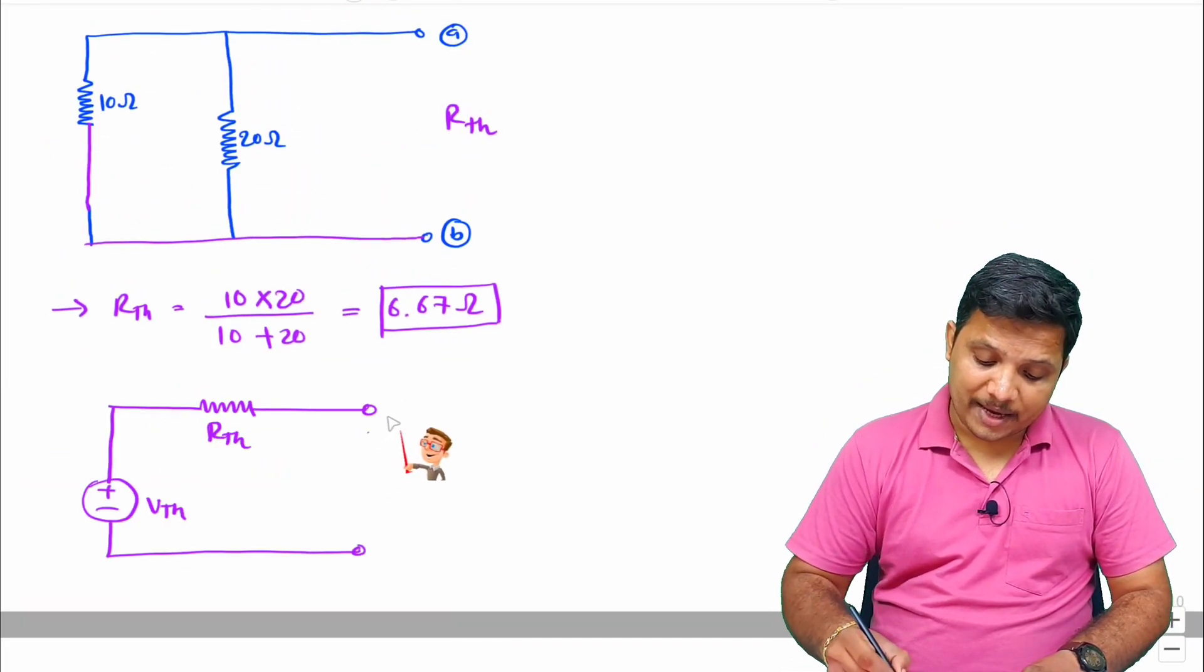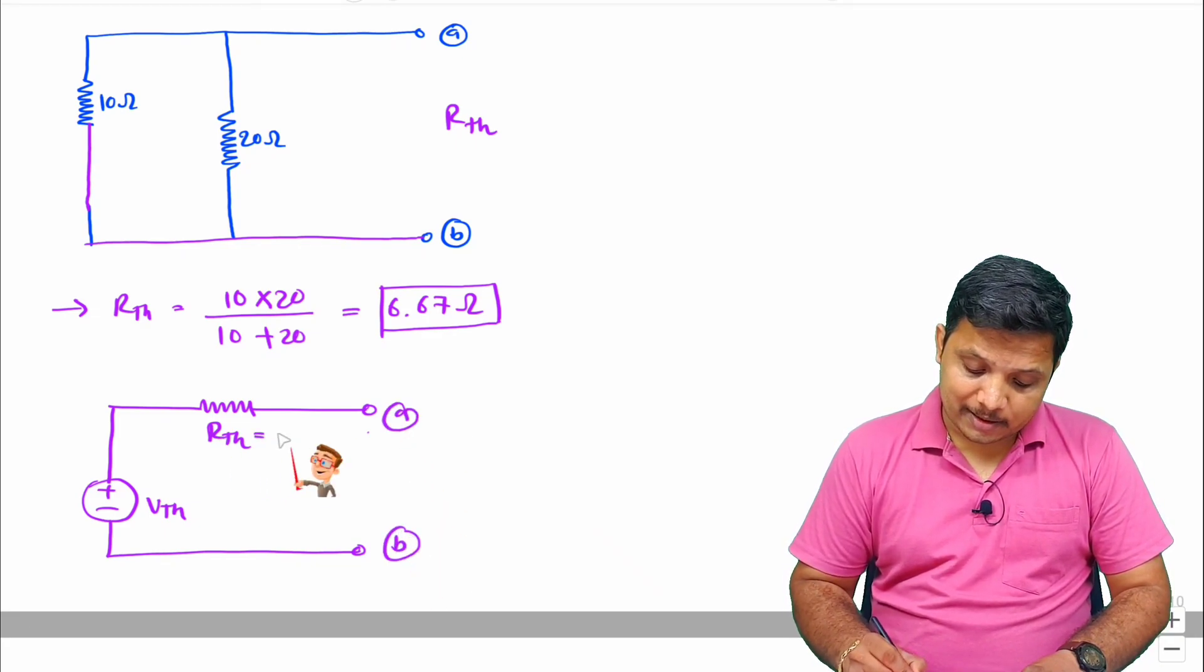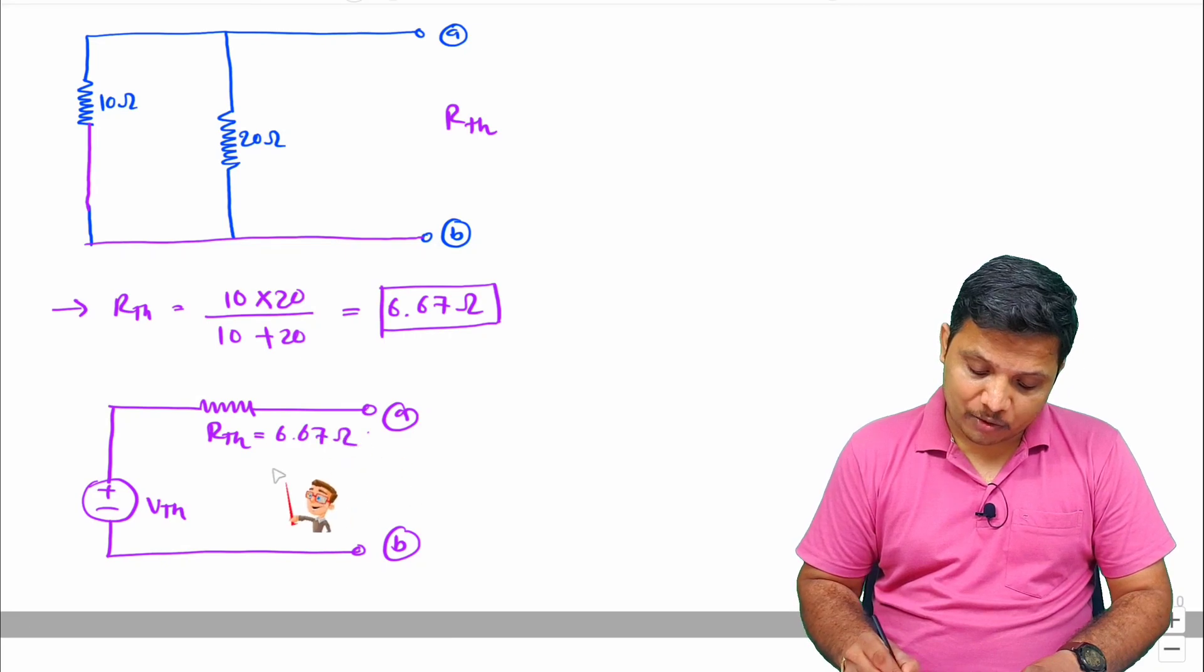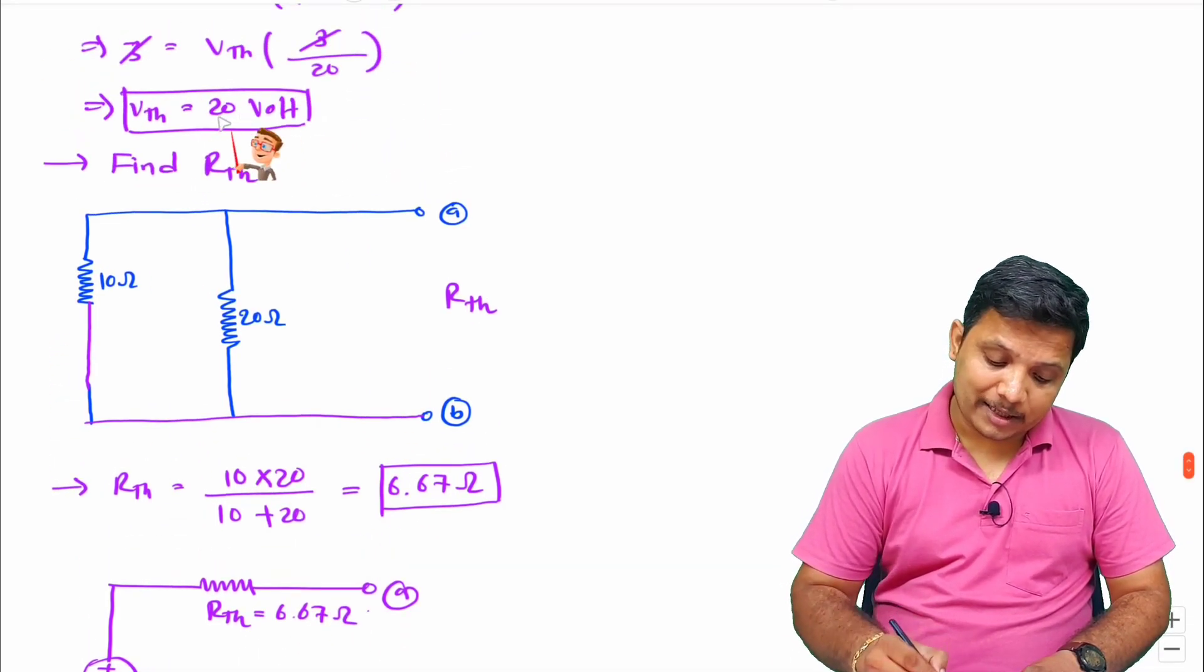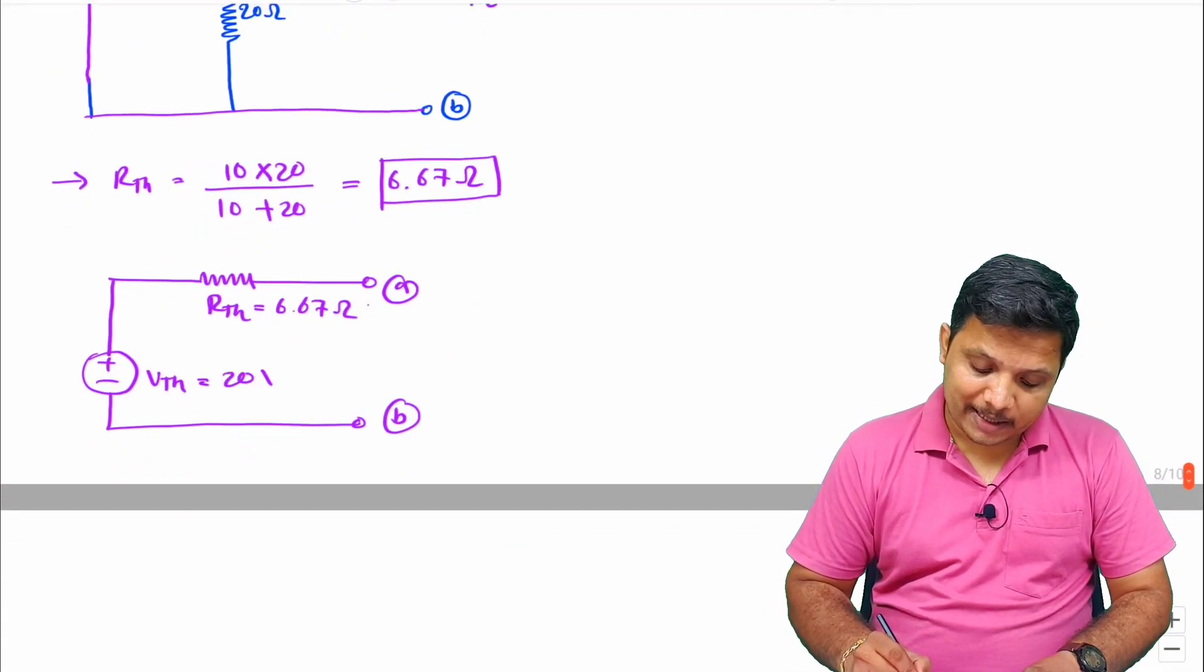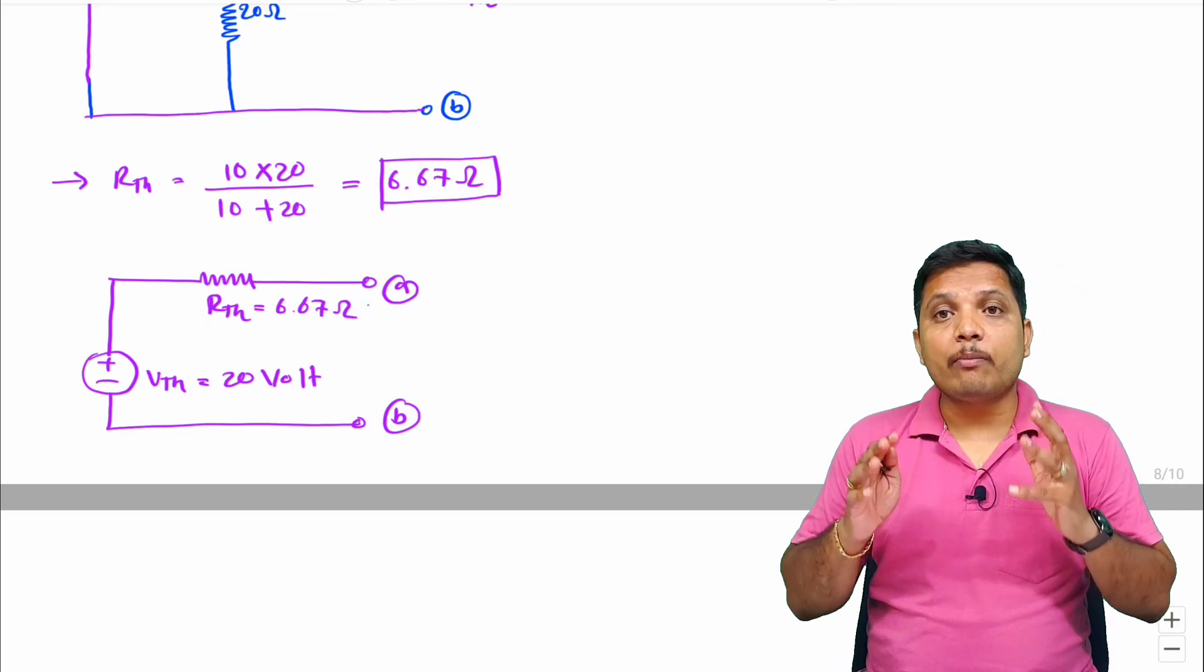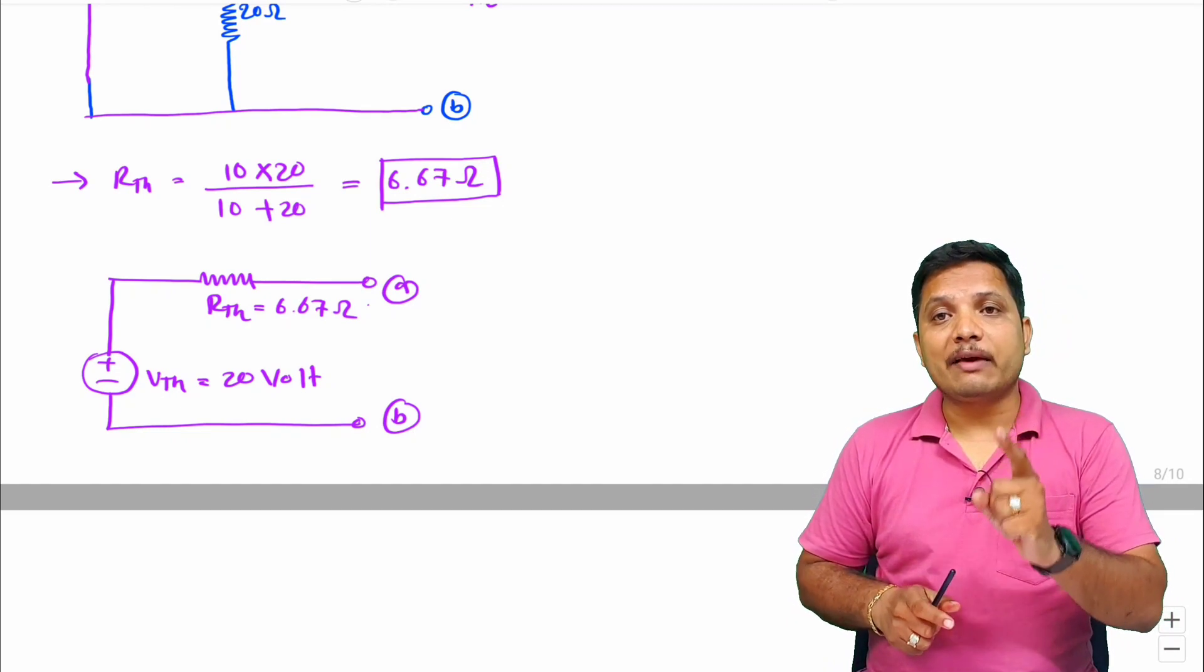Now you see here we have terminal A and B. RTH is 6.67 ohm and VTH that we have calculated is 20 voltage. So VTH is 20 voltage. This is how we can reduce complexity of circuit by using Thevenin's theorem.